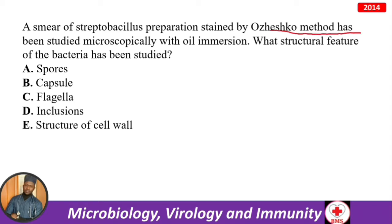A smear of a streptobacillus preparation stained by Orshanko's method has been studied microscopically. What structural feature was studied? Orshanko's method is for spores. Boris staining is for capsules. Dark-field microscopy and movement visualization is for flagella.